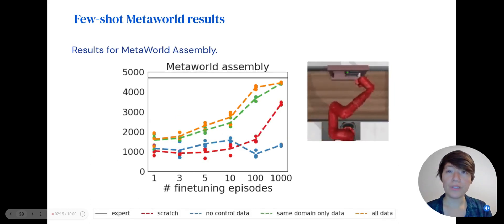For MetaWorld assembly, the inclusion of other data from the MetaWorld domain is important, and adding all control data gives a small boost in the 10 to 100 episode regime. This task and the previous one, cartpole swing-up, don't require pixel or language processing, so it makes sense that the no-control data baseline does poorly in both, since it only includes image and language data.